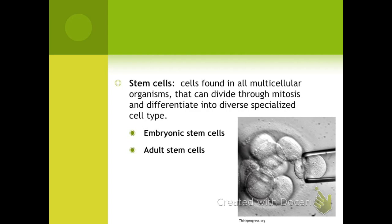We have two categories of stem cells. We have embryonic stem cells, which are being developed in the embryo — they have not specialized and retain the ability to divide and specialize into any of the systems of the body. Then we have adult stem cells, which are not as flexible. For example, bone marrow is an adult stem cell that can become a large number of different cells such as a red blood cell or different types of white blood cells, but it could not become a nerve cell or a skin cell. It has some flexibility, but not unlimited — it can't become any cell of the body.